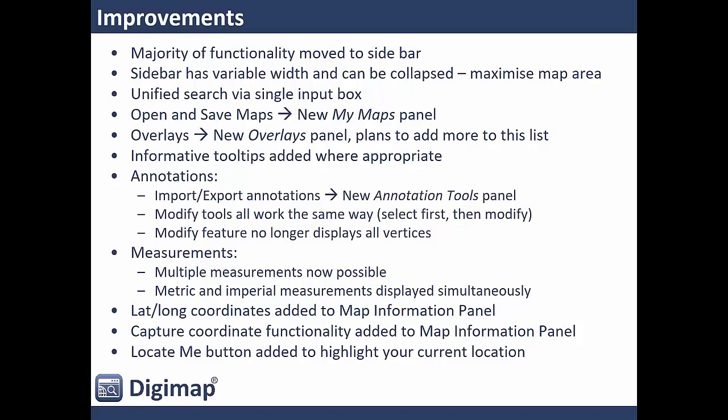With the overlays, that's in a panel on the left rather than being a dropdown from the top. We've added a lot more tooltips to everything, so it's a lot easier to see what's going on and know how to use a tool from the start. The annotations have some big improvements in how they work, all on a panel on the left. The modify tools work in the same way — you select the item and then modify it. The measurement tools now let you do multiple measurements simultaneously — you can draw two lines and have their lengths on the map, or a line and an area. You're also getting metric and imperial measurements for both distances and areas.